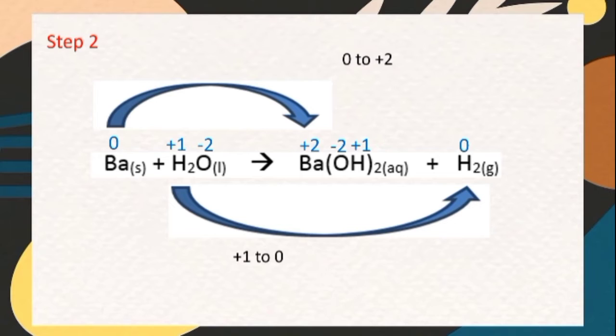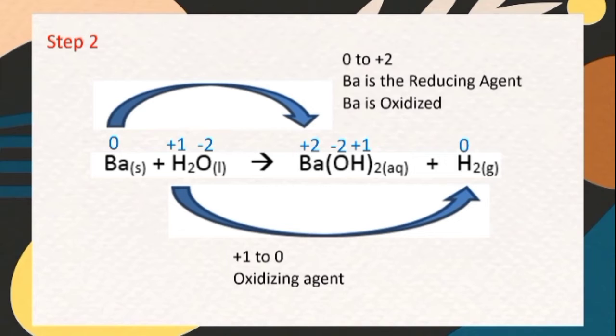Based on the OIL and RIG acronym, the element with an increase of oxidation number would be the reducing agent, which in this case is the barium element, while the element with a decrease in oxidation number would be the oxidizing agent, which in this case is the hydrogen element. Thus, making barium oxidize and water being reduced.